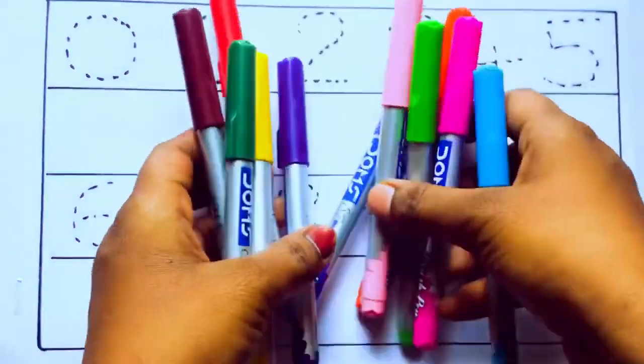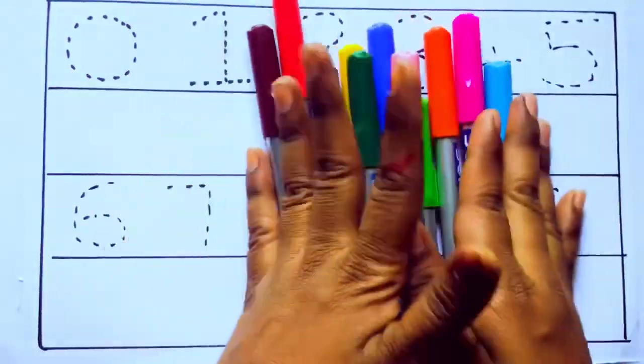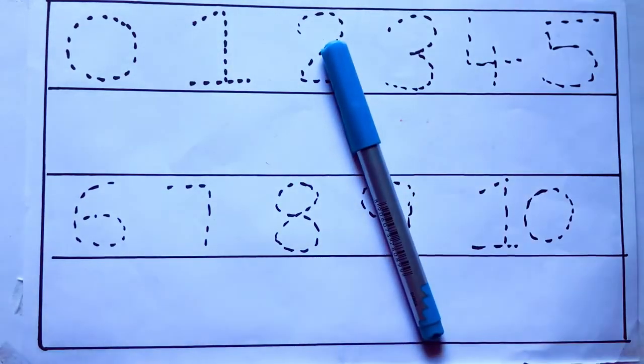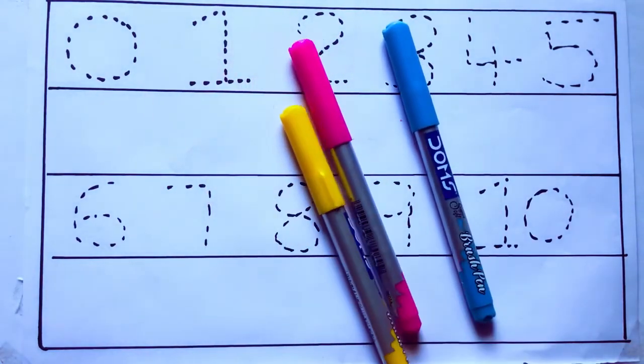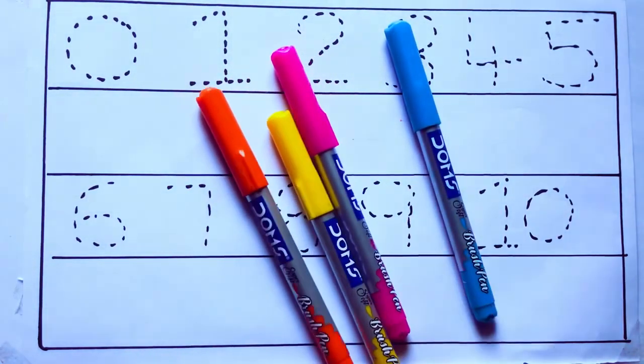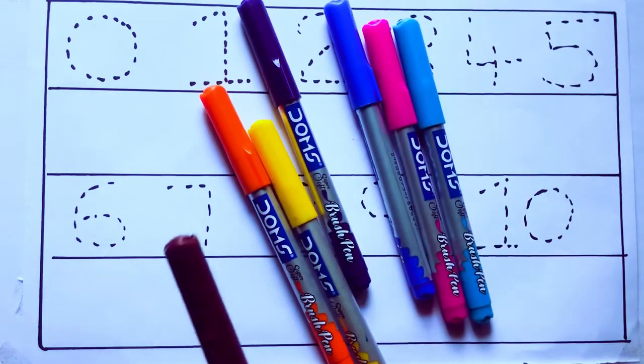Let's learn some colors. These are all the color pencils. Let's learn the names: sky blue color, pink color, yellow color, orange color, violet color, blue color, brown color.